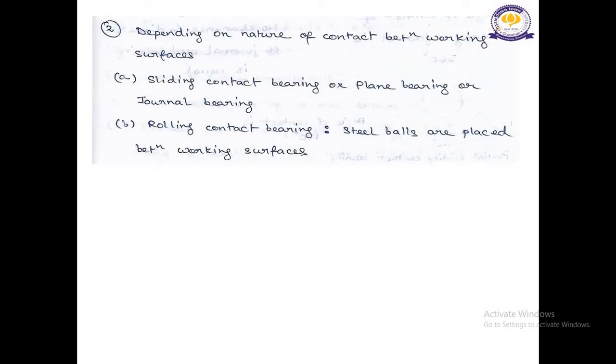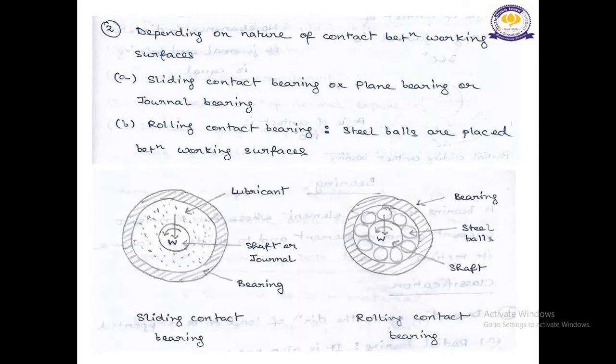Number 2. Depending on nature of contact between working surfaces, it can be classified as number A, Sliding Contact Bearing or Plane Bearing or Journal Bearing. And number B, Rolling Contact Bearing, where we can take examples of Rolling Contact Bearing as steel balls are placed between working surfaces. Here you can see Sliding Contact Bearing and Rolling Contact Bearing, the two sketches.